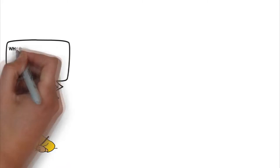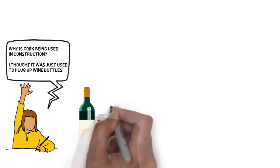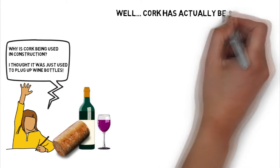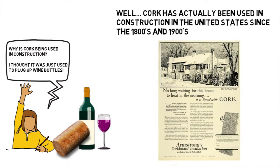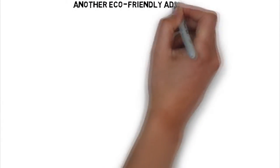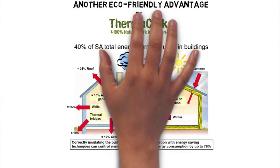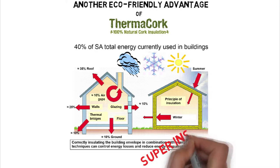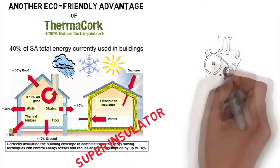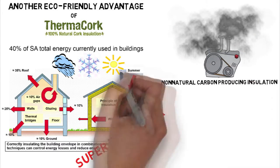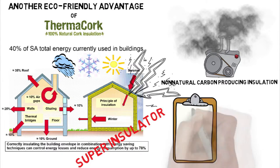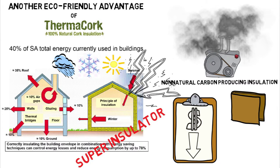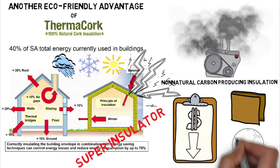You might be asking, why is cork being used in construction? Cork has actually been used in construction in the United States since the late 1800s and early 1900s, as seen in this Armstrong Cork Company advertisement from 1920. Another eco-friendly advantage of cork is that it is a super insulator — keeping heat in when it's cold outside and keeping cool in when it's hot outside — far surpassing non-natural carbon-producing insulation. This allows for an extremely more efficient use of energy for a house or building, lowering your energy bill, which is good for your wallet, and further lowering the amount of carbon generated, which is good for the planet.